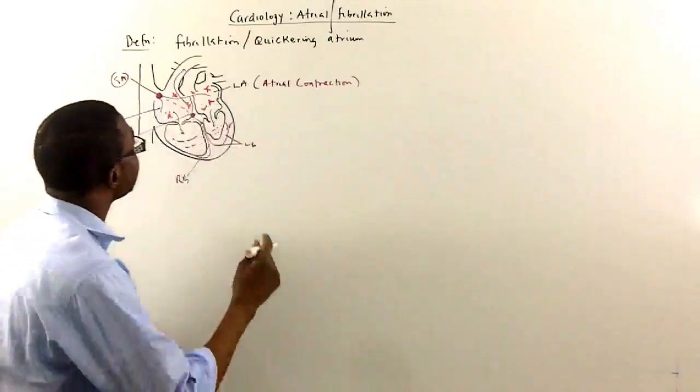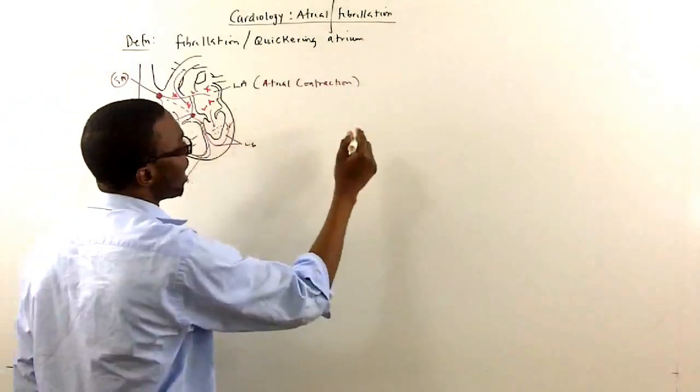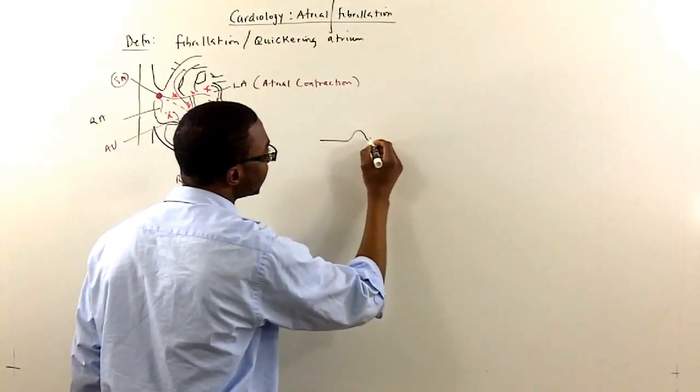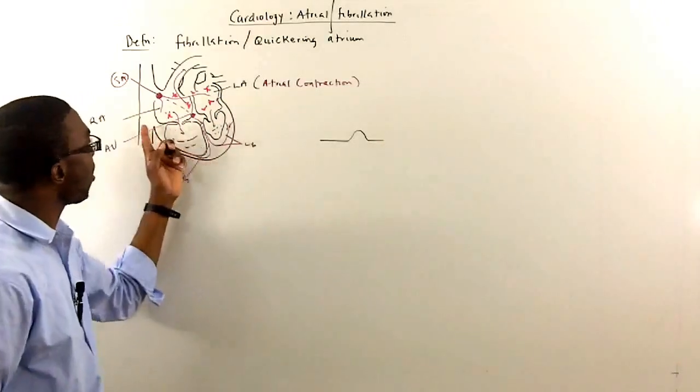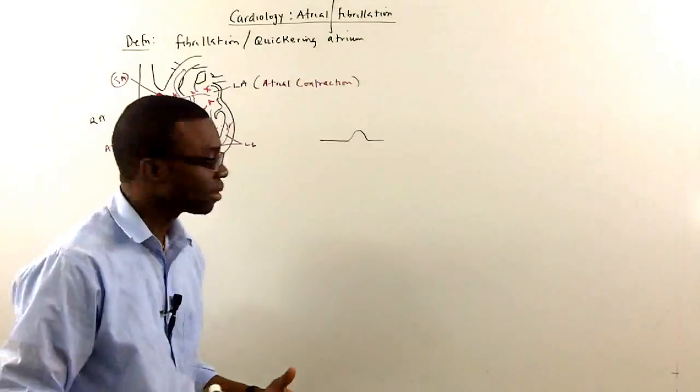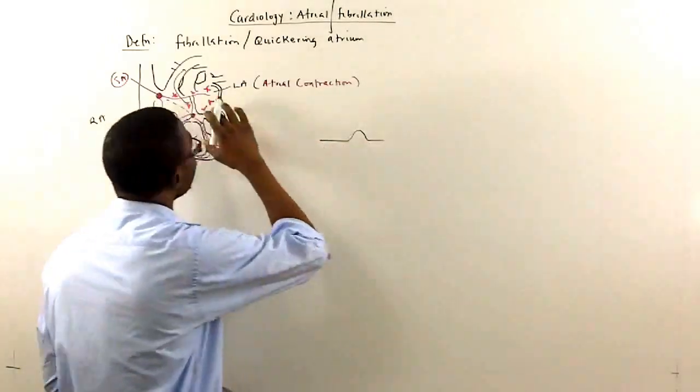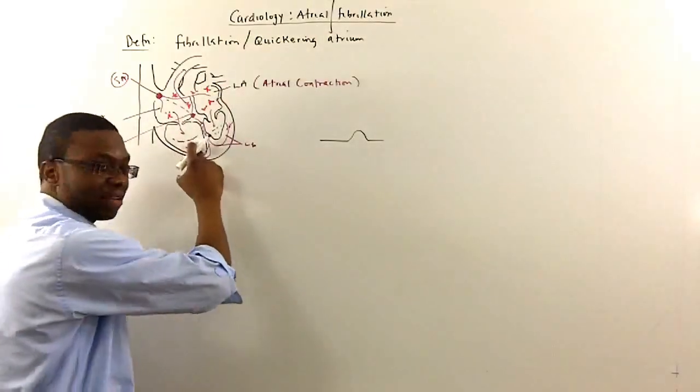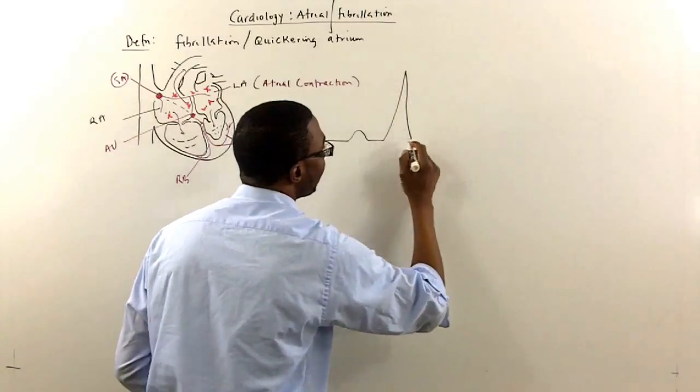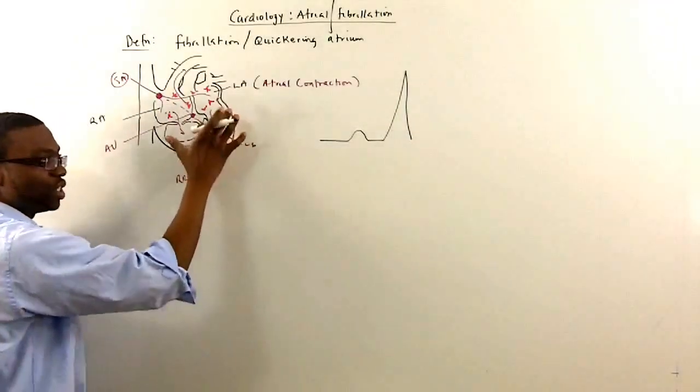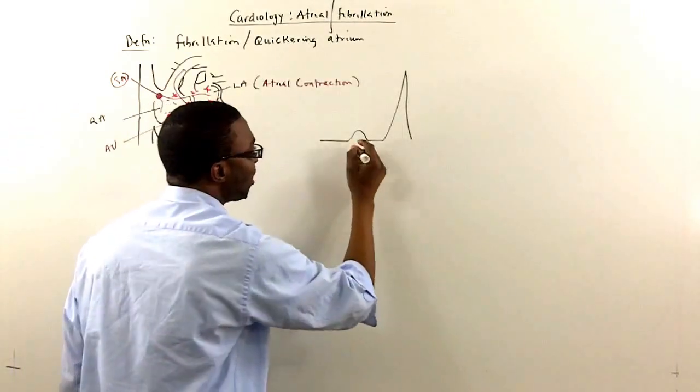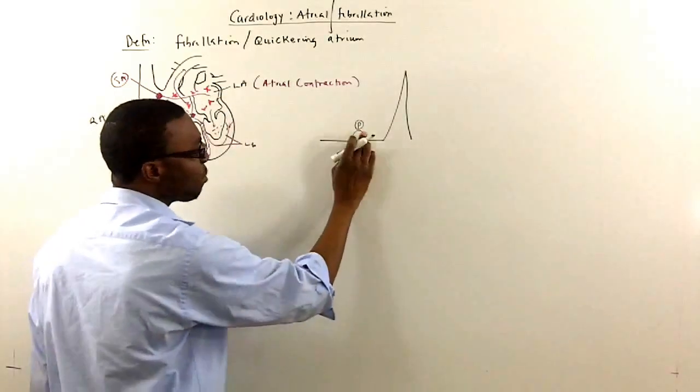Well, normally, this is what happens. When the atrium fires, when the sinoatrial node fires, and you look at your electrocardiogram, you see a P-wave. A P-wave means all this atrium has depolarized. It just means atrial depolarization, and then once the atrium depolarizes, then the ventricle depolarizes and you see a QRS.